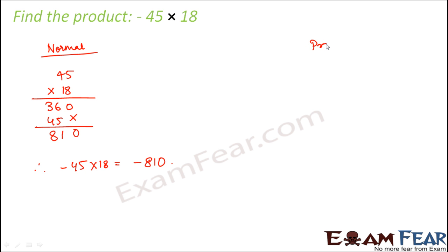Now let us make use of properties. So when you make use of properties, what you do instead of 18, you write it as 20 - 2. 18 can be written as 20 - 2.